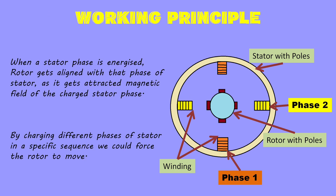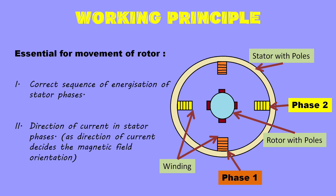Working principle of a stepper motor: the basic working principle is that when a stator phase is energized, a magnetic field is generated by the current flowing through the coil of that phase, which results in rotor alignment with the field generated. This way, when we energize different phases of the stator in a predetermined way, we will be able to move the rotor continuously. The sequence of energization of phases and current in stator phases will be of paramount importance for correct functioning of the stepper motor.